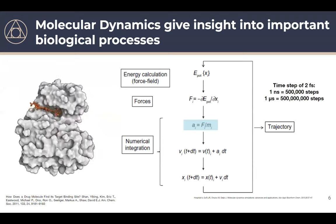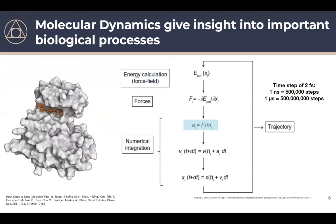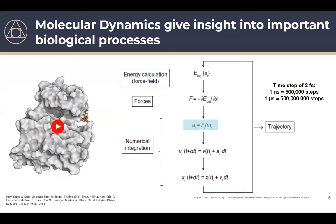To create these movies, we need a potential energy function that describes how all the atoms interact with one another — we typically use a molecular mechanics force field for that. Once we have the potential energy function, we take the derivative to get forces acting on all atoms. From forces and mass, we get acceleration, and through integration the change in velocity and position. We update all atom positions and repeat this step again and again.